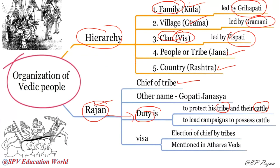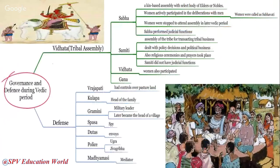Visa was a type of election for the chief of the tribes — mentioned in the Atharvaveda. Regarding governance during the Vedic period: the king had guards, and the village head led discussions where everyone decided matters together — an early form of democracy. These were successful democracies where decisions were taken by public interest.